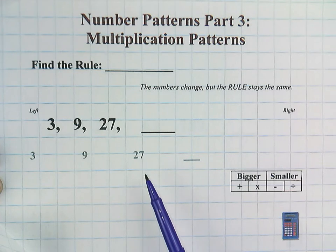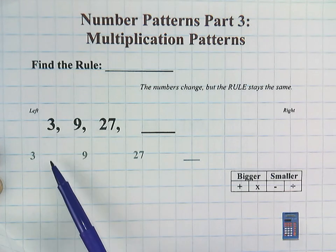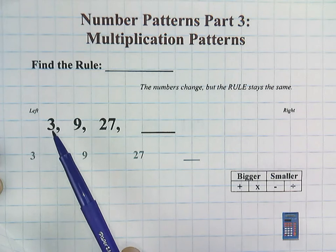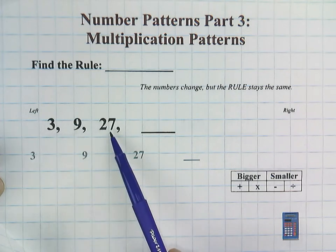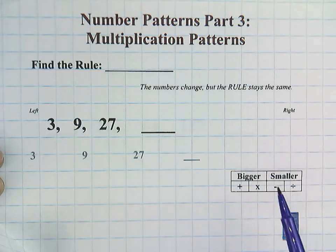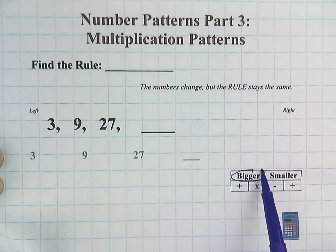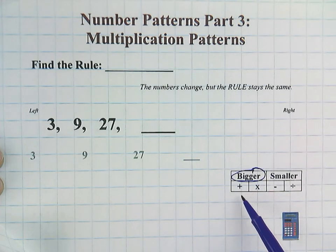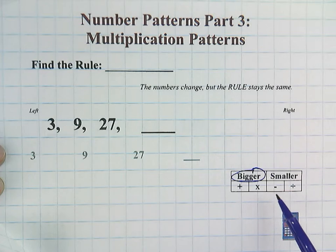The numbers here at the bottom are stretched out so that we can see the rule in action today. Okay, 3, 9, 27. Numbers are definitely getting bigger, which means it's either going to be an addition rule or a multiplication rule.